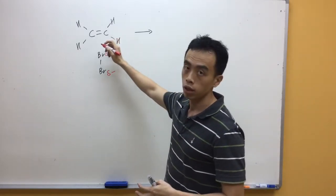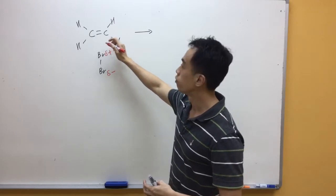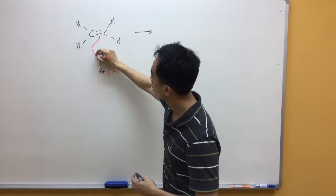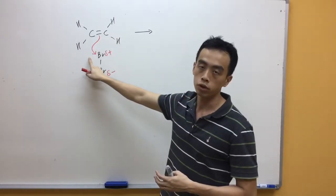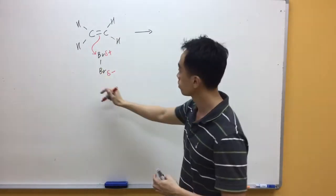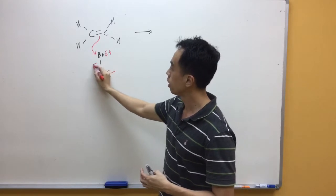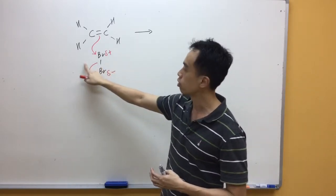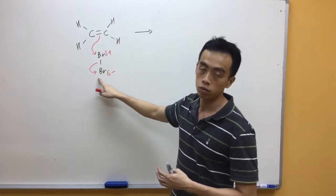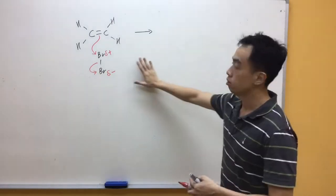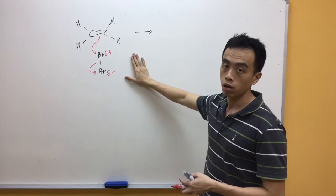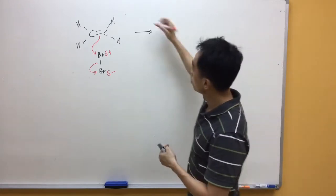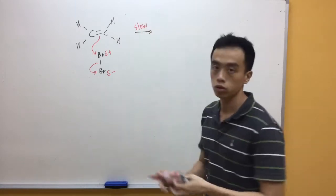This bromine which is closer to my alkyne will be the electrophile because it is positively charged. What happens is I will draw an arrow from my double bond to my Br⁺. This is a full arrow because it is a movement of two electrons. Then, this Br-Br bond will break. Both electrons will go to the Br which is partial-minus charge. The first step of electrophilic addition will be a slow step. I will just write slow on top of the arrow.